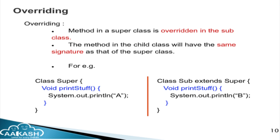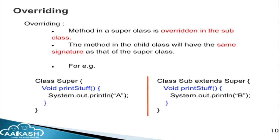What is overriding? Overriding is when a method in the superclass is overridden in the subclass — the method in the child class has the same signature as that of the superclass. In overriding, the same access modifier and same return type are required. Here I have two classes: Super and Sub extending Super, both with a void printStuff method with the same signature, but Super prints A while Sub prints B. This is called overriding.